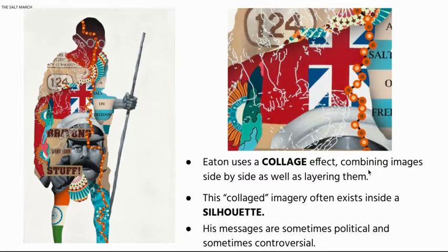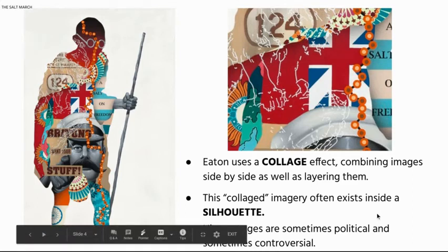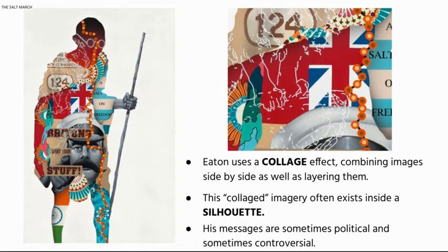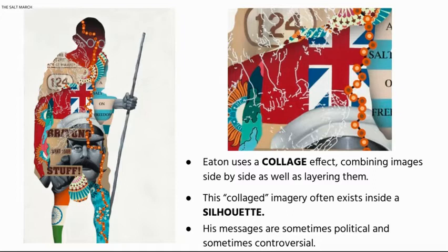I believe it's created digitally in Procreate or Photoshop or something like that. Once he's created those collages, he puts them inside of the silhouette of usually a figure. If you look at the shadow shape of the figure on the left, that's a pretty recognizable silhouette — even if you didn't see the little round glasses inside the silhouette, you can probably recognize that that's Mahatma Gandhi. This particular piece is called Salt March.